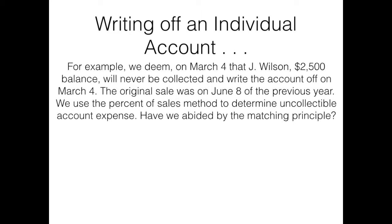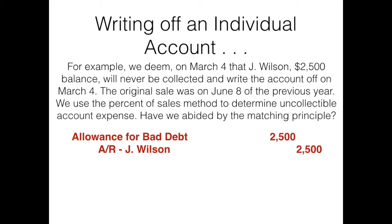How do we write this person off? Since we've already recorded the expense, there's no expense in this journal entry. We've now identified one customer we'll never collect from, so we need to remove them from the allowance account. The allowance account carries a normal credit balance, so to remove it we debit the allowance account. To write off the customer's balance, we credit accounts receivable for that particular customer's $2,500.